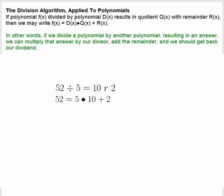The division algorithm says if you have a number or a function divided by a divisor, and you get an answer, which we call the quotient, plus a remainder, we can rewrite that original number, the dividend.